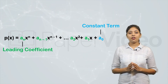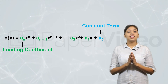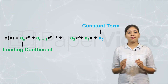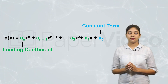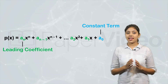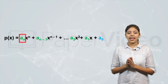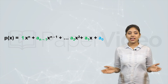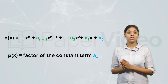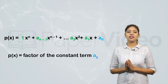According to the theorem, if p of x is a polynomial with integral coefficients and the leading coefficient is 1, then the integer root of p of x is a factor of the constant term. This means that if p of x is a polynomial such that all the coefficients are integers and an equals 1, then the integer root of a polynomial p of x will be a factor of the constant term a0. This is known as the Integral Root Theorem.